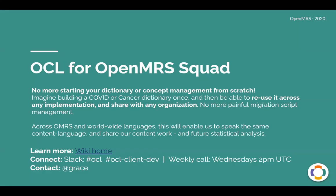Without any further ado, let's dive in. So I'll go first and just to set the tone. We'll start with the OCL for OpenMRS squad. What you need to know about this squad is that our goal is that there's no more starting your dictionary or concept management from scratch. Imagine that you can build your COVID or cancer dictionary just once and then be able to reuse it across any implementation and share it with any organization. The idea is no more painful migration script management, all those CSV imports across OpenMRS and across all of the languages that we use on this planet. This will help enable us to speak the same content language and share our content work and future statistical analysis. If you'd like to learn more, we've got a link in the slides. We also have several Slack forums where we meet and a weekly call which you're welcome to join.